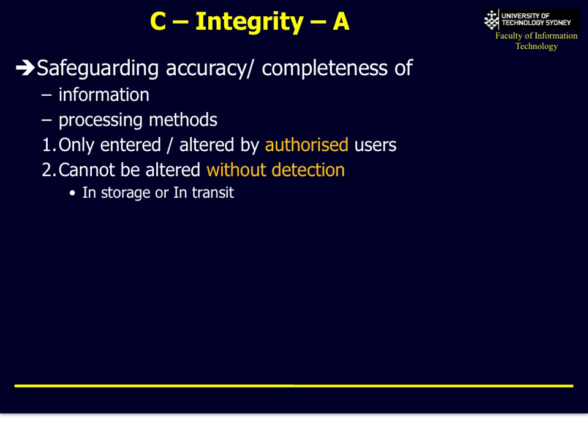The second concept is integrity. We may be authorised and have access to information, at the correct location, using the right protocols — but what if somebody alters the data? For example, you enter a credit card for buying something from eBay and suddenly you have ten orders instead of one. We need to make sure information is correct, processed correctly, and hasn't been changed without your knowledge — whether in storage on disk or in transit over the web.